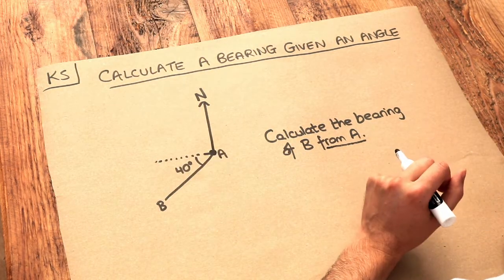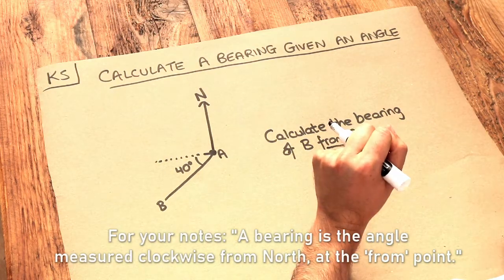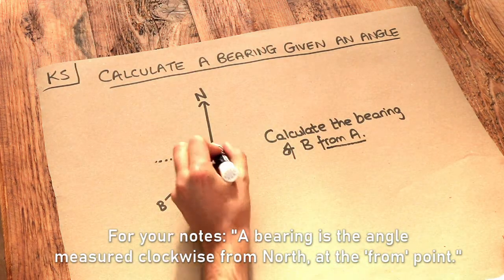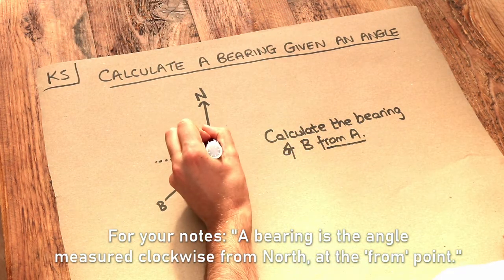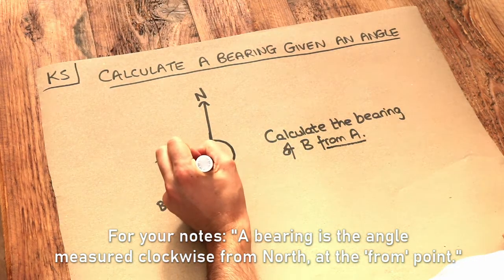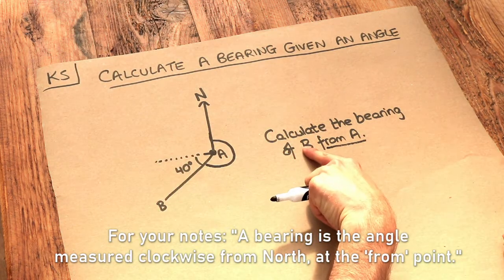Remember, a bearing is the angle measured clockwise from north. So if we're at A, we start facing north and go clockwise until we're facing the other object B.